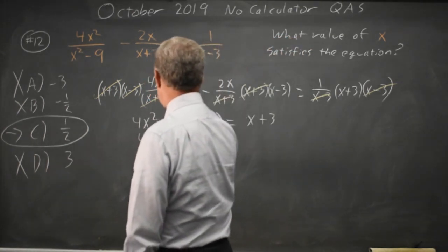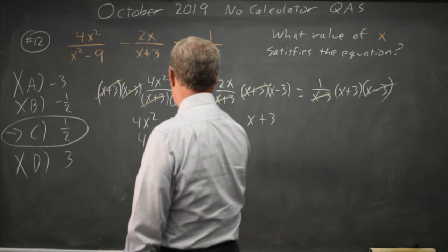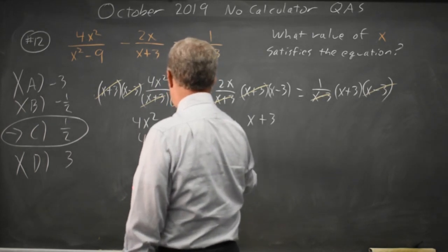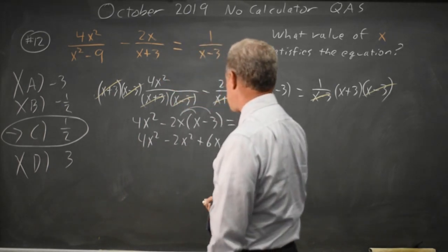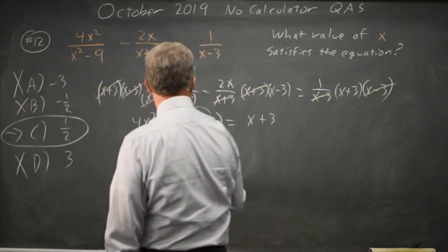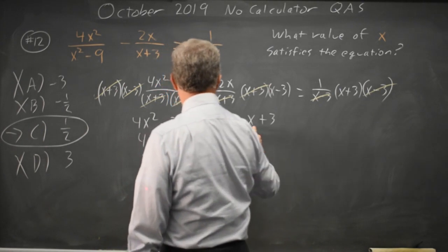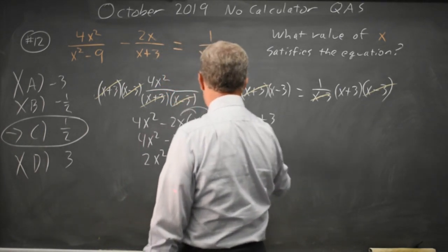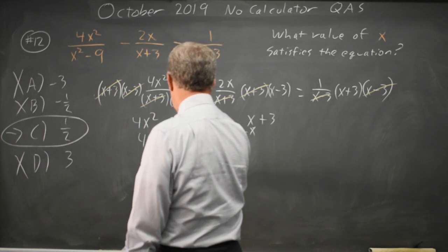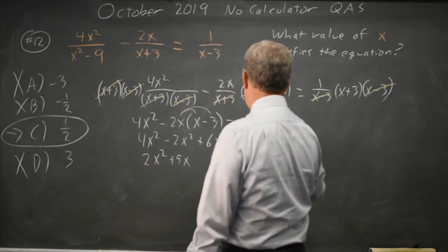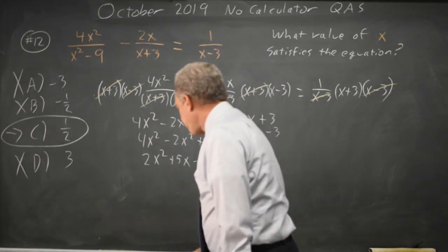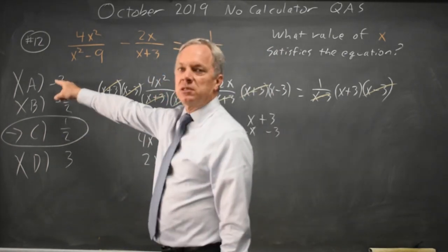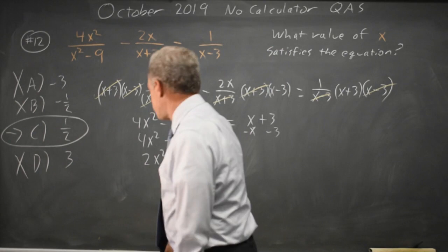4x squared distributing to both terms minus 2x squared plus 6x. So that's 2x squared plus 6x, plus 5x and subtract 3 from both sides, minus 3 equals 0. I expect this to factor because I have nice pretty numbers for my answer choices.